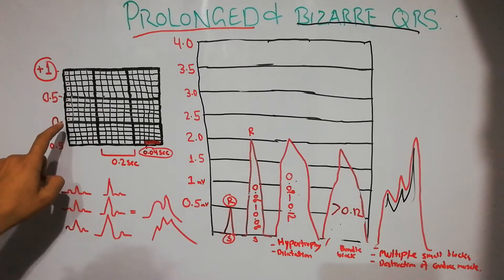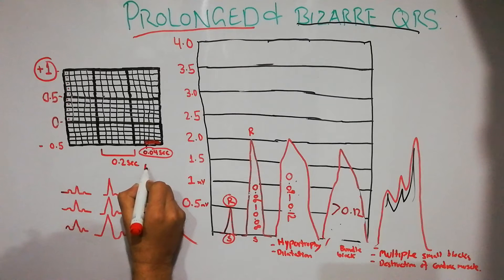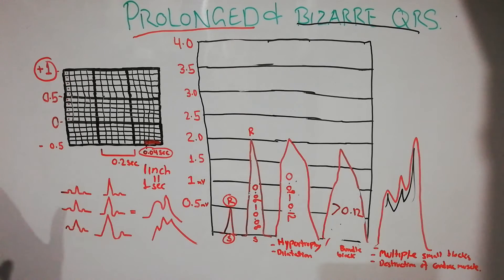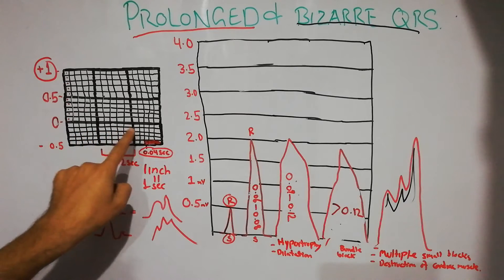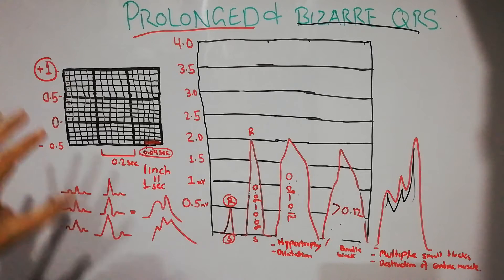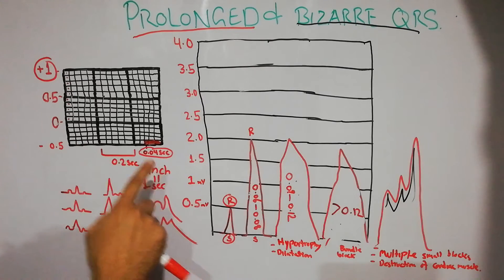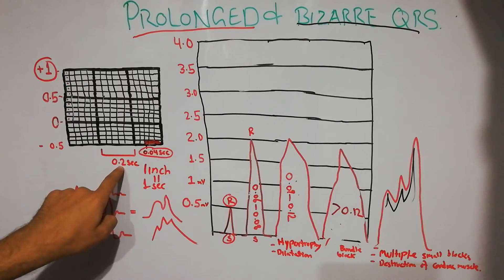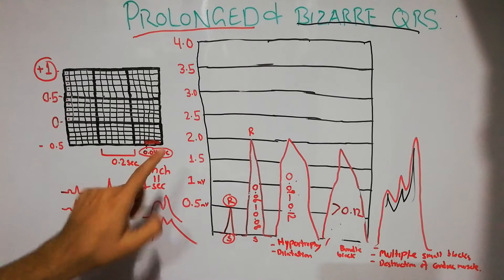Each large square also has five small squares horizontally. Horizontally, the calibration is such that one inch equals one second — the paper moves through the machine at a speed where one inch comes out per second. That one inch contains five large squares, so each large square is 0.2 seconds in duration, and each small square is 0.04 seconds.